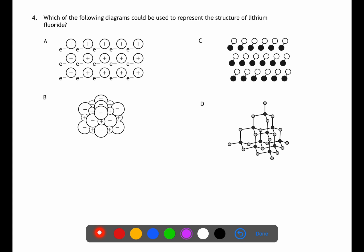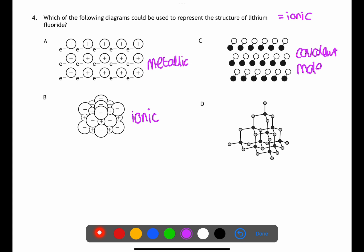Question four is looking at the structure of different bonding types, and we're looking for the representation of lithium fluoride, which is an ionic compound made up of a lattice of alternating positive and negative ions. Picture A represents metallic bonding — positive ions in a sea of delocalised electrons. Picture B represents ionic bonding. Picture C shows covalent molecules and picture D shows a covalent network. Therefore B is the answer.